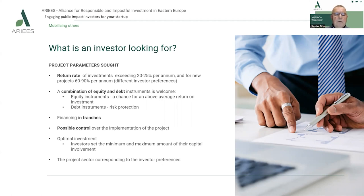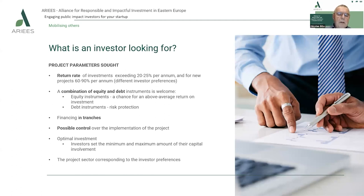For new projects, the return rate of investment is even higher — 60 to 90 percent yearly — according to different investor preferences. Second, investors look for a combination of equity and debt instruments. Equity instruments give them an above-average return on investment, while debt instruments provide risk protection. Third, they prefer to finance startup companies in tranches, meaning they don't want to provide the whole amount needed upfront, preferring to give it in several installments according to the company's needs at precise periods of time.